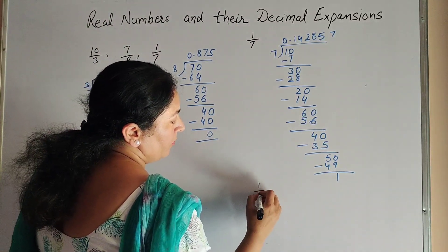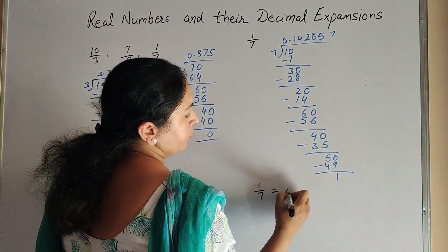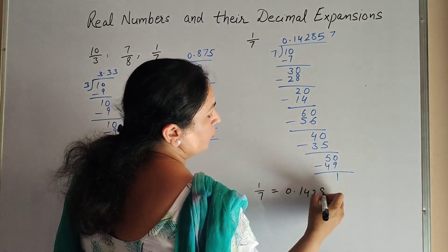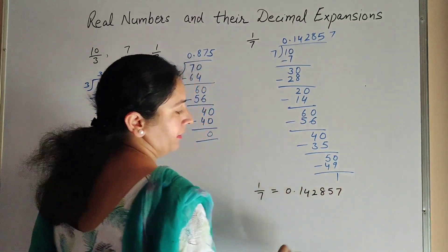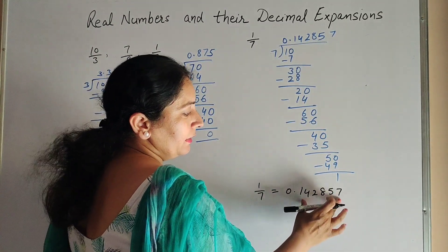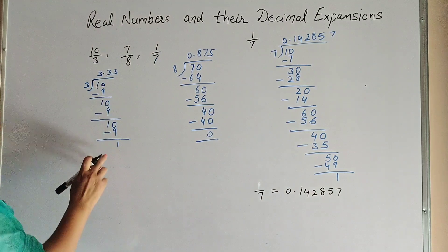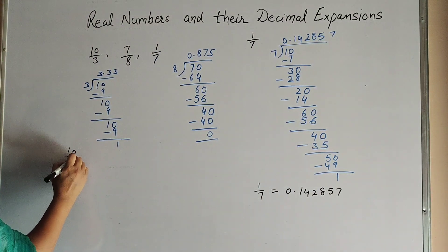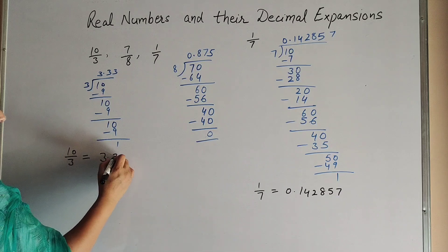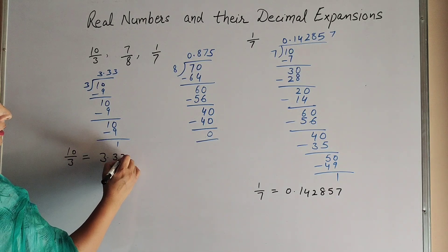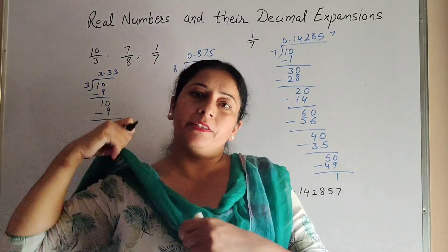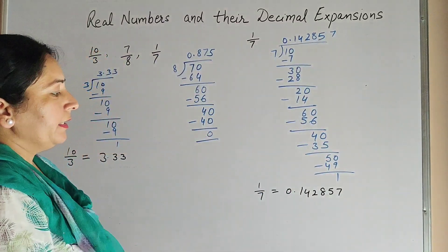So 1/7 equals 0.142857, with this block of six digits repeating in the quotient. And 10/3 equals 3.333..., with the digit 3 repeating in the quotient. In 1/7, these six digits repeat in the quotient.